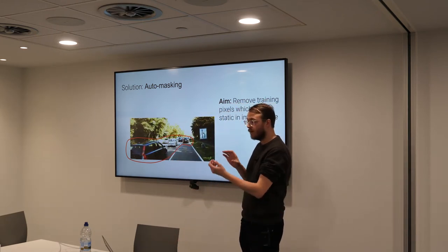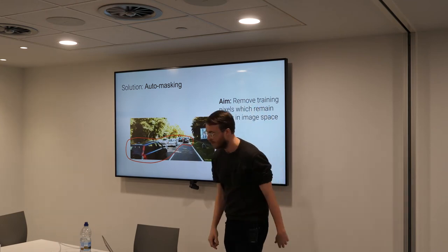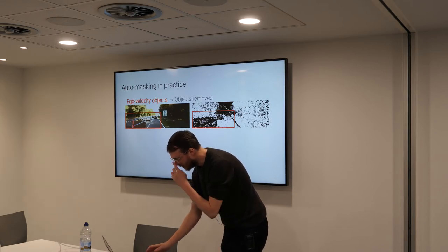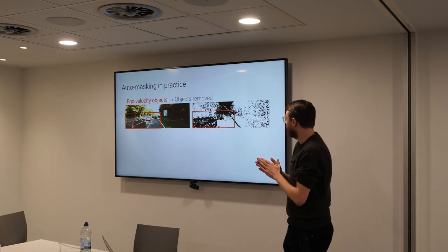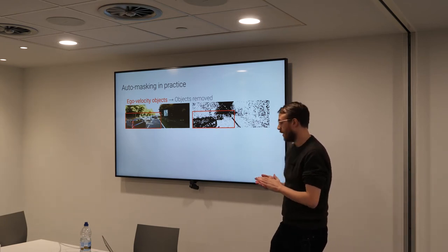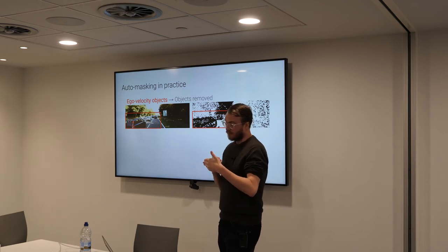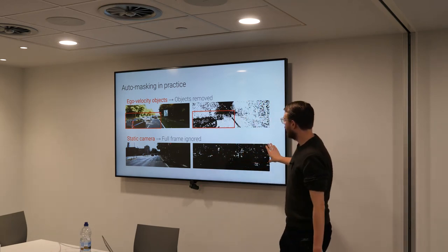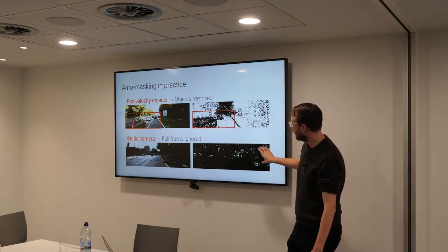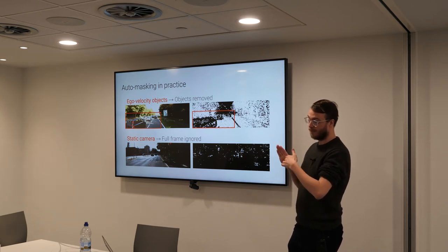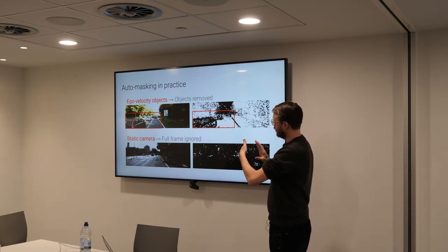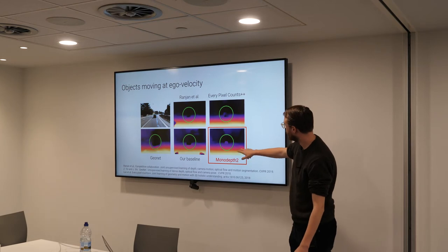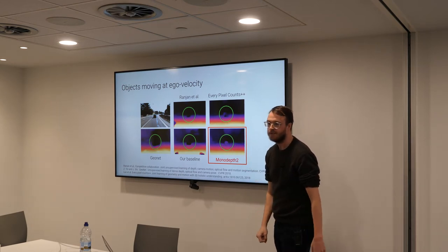We have a mechanism to dynamically ignore certain pixels. The way they get ignored is: if we can explain their motion by them not moving at all, we'll use that as the reconstruction for them. This also works quite well on scenes where the camera is static — the explanation for any appearance change is that there's no motion whatsoever. And when we train our model this way, we end up doing a much better job of predicting these types of objects.